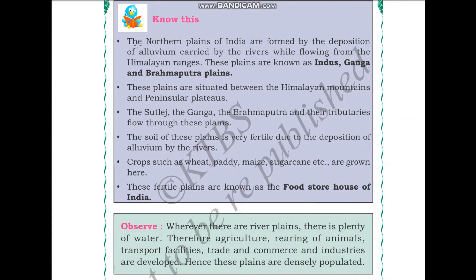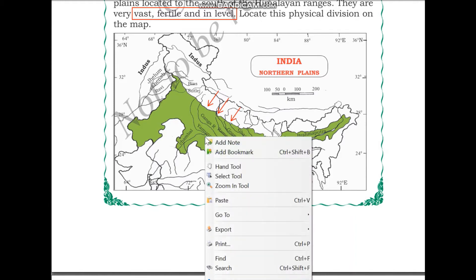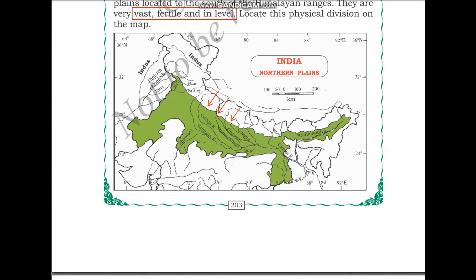The northern plains of India are formed by the deposition of alluvium carried by rivers while flowing from the Himalayan ranges. Alluvium is a very fertile deposit of clay, sand, and silt brought by rivers - it can be considered a very fertile soil. The rivers which take origin in the Himalayas include the Yamuna river and its tributaries, the Ganga river, and the Brahmaputra river located over here.